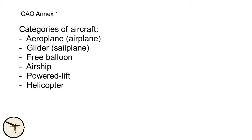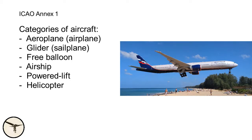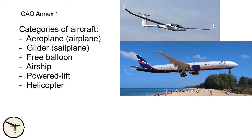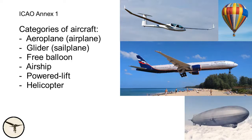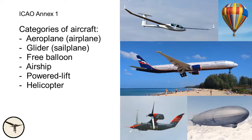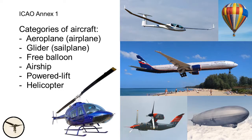According to ICAO Annex 1, there are six categories of aircraft: aeroplane or airplane, glider or sailplane, free balloon, airship, powered lift — which is an aircraft that takes off and lands vertically and uses a fixed wing for horizontal flight — and helicopter. Each category of aircraft requires a pilot license.